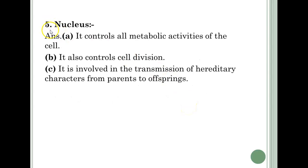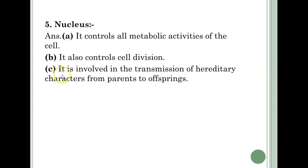Fifth question — Nucleus. Answer A: It controls all metabolic activities of the cell. B: It also controls cell division. C: It is involved in the transmission of hereditary characters from parents to offspring.